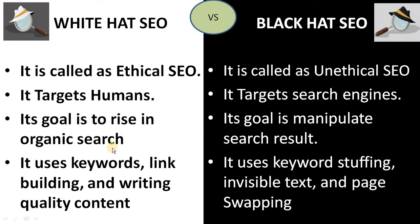White Hat SEO's goal is to rise in organic search — we are targeting that in the organic search results, the website ranking should increase and that ranking should continue for a longer time. Black Hat SEO's goal is to manipulate search results — they manipulate search results to get ranking for a short span only, just long enough to make some business. After that, sites can be banned, and they don't care.